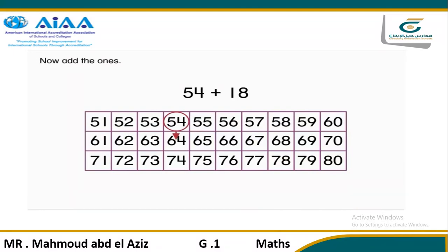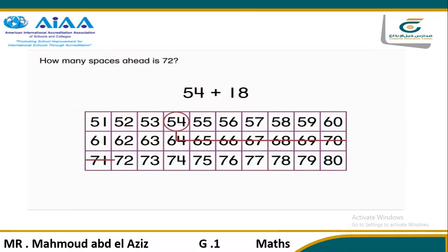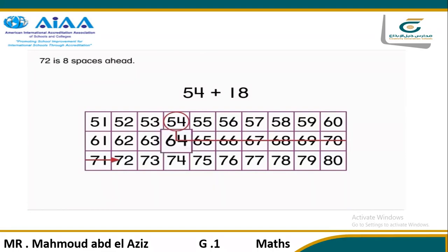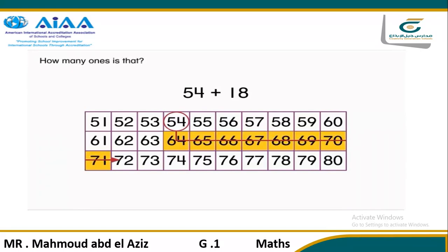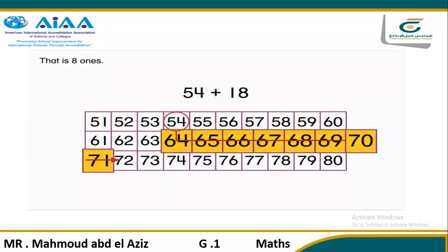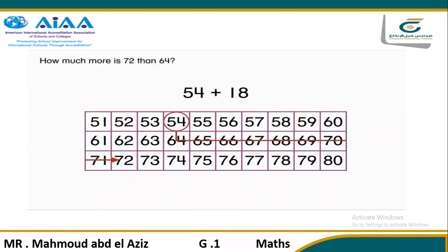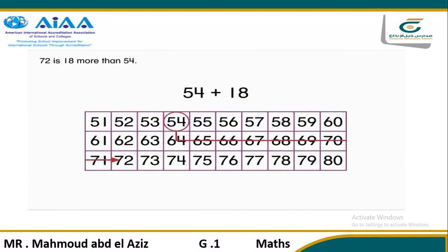Now add the ones. You are already at 64. Now move ahead eight to show eight ones. How many spaces ahead is 72? You need to go to the next row to add them all. 72 is eight spaces ahead. How many ones is that? That is eight ones. How much more is 72 than 64? 72 is eight more than 64. How much more is 72 than 54? 72 is 18 more than 54.